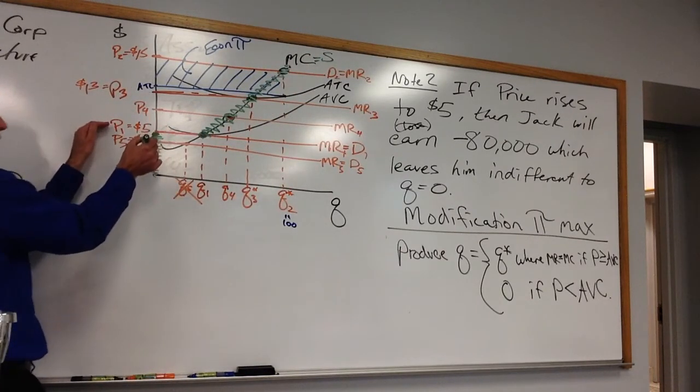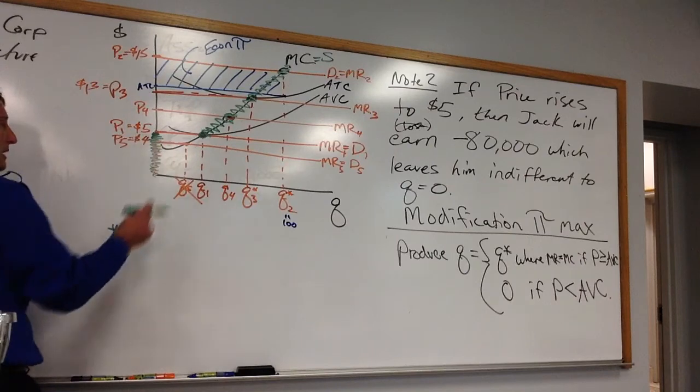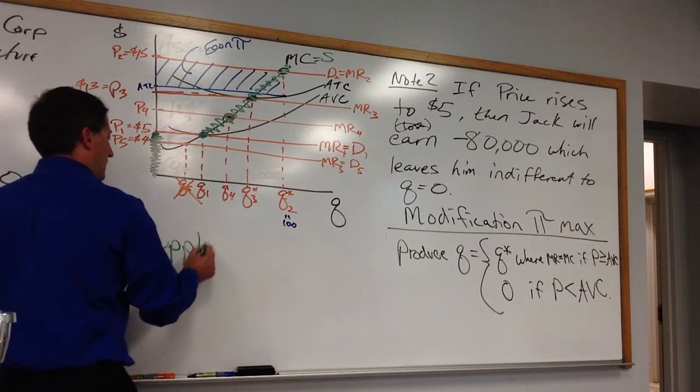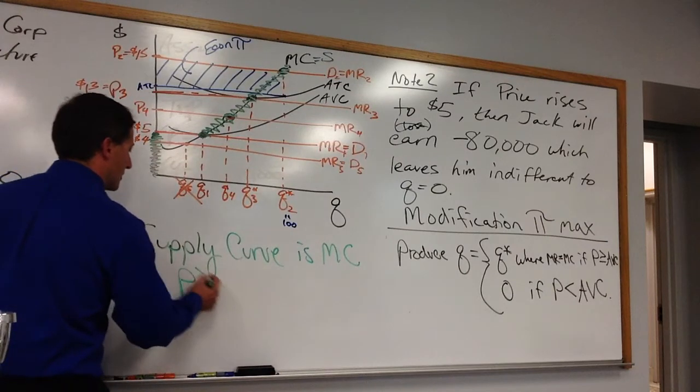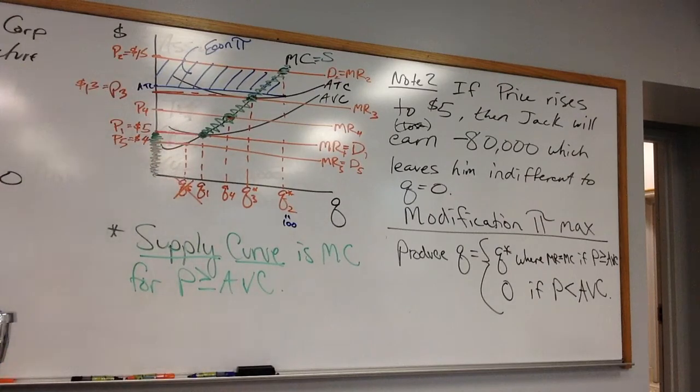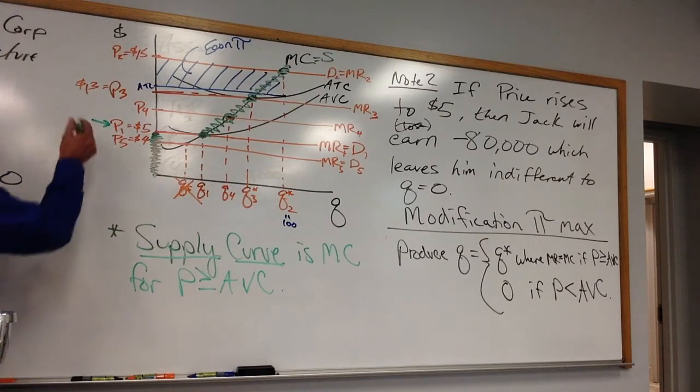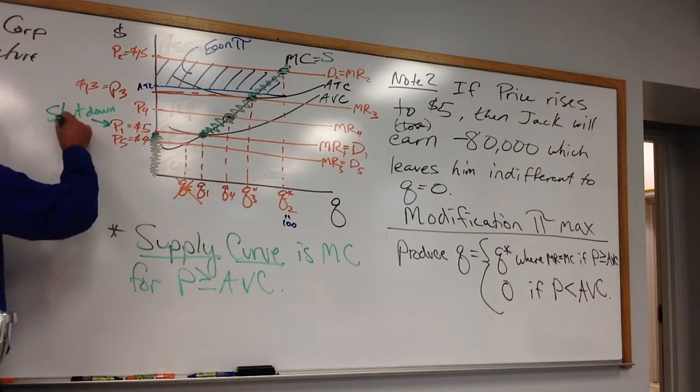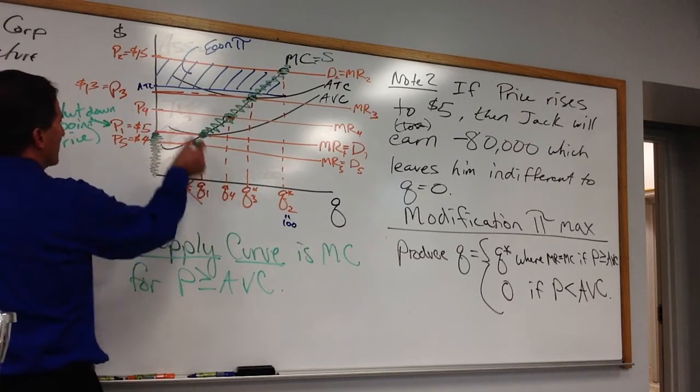We're not going to produce anything until I get up to 5 and then, boom, I'm going to start producing. And so back in Chapter 3, we kind of had you take it on faith, but we didn't have time to get this far. The supply curve is the marginal cost curve for prices greater than or equal to average variable cost. The supply curve is the marginal cost curve. And this price here is called the shutdown price, or sometimes the shutdown point. And this would be the shutdown quantity associated with that.